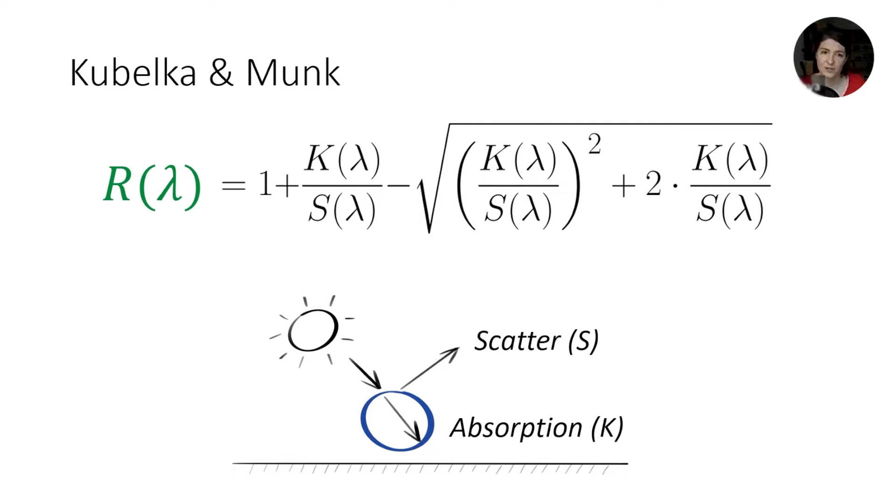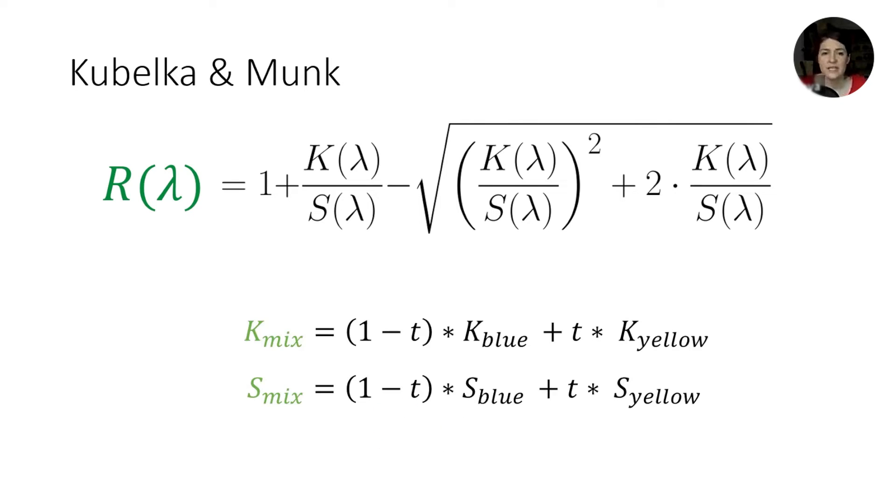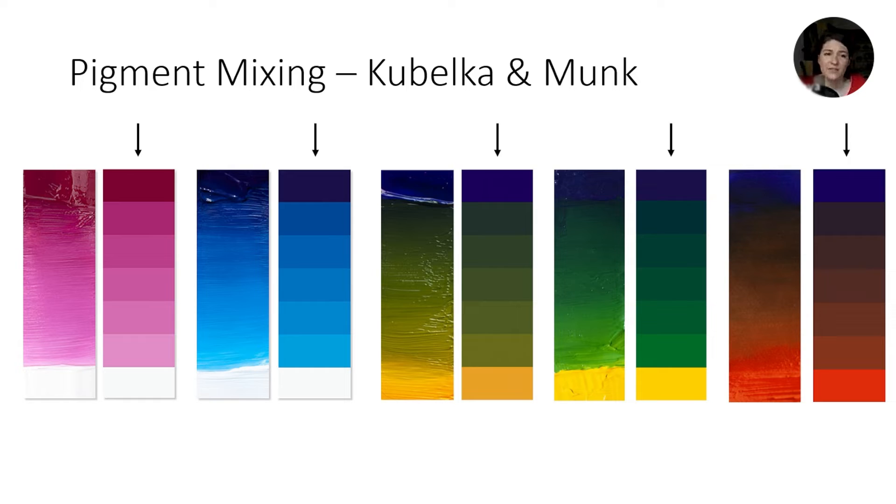So when you mix two or more pigments together, you just make a linear combination of their absorption and scatter coefficients, and you pass it through this equation and get the color of the mixture. So that's how easy it is. And look how beautifully Kubelka and Munk predicts the behavior of paints. It's almost unbelievably accurate, and the bottleneck here is the correct measurement of the two spectra from the pigment, but luckily there are some data sets available today.